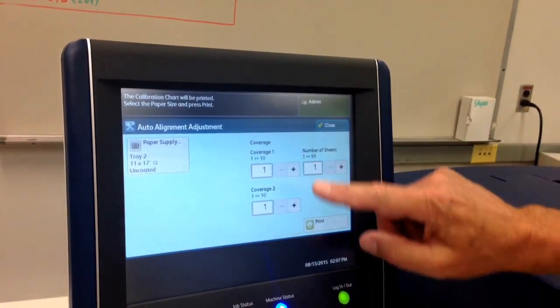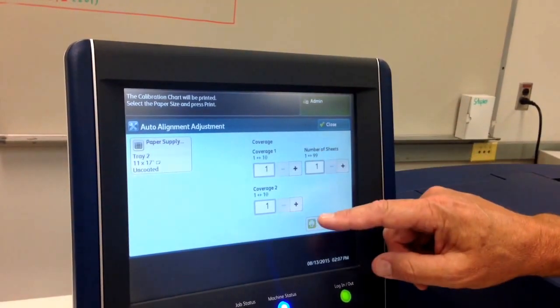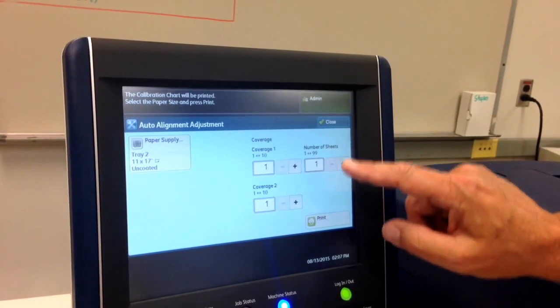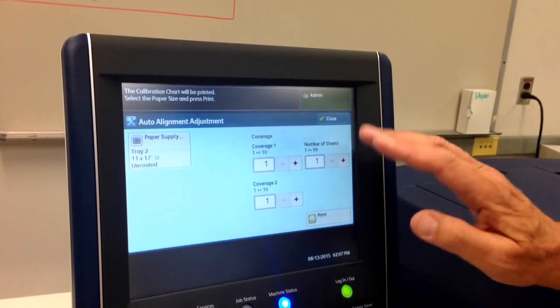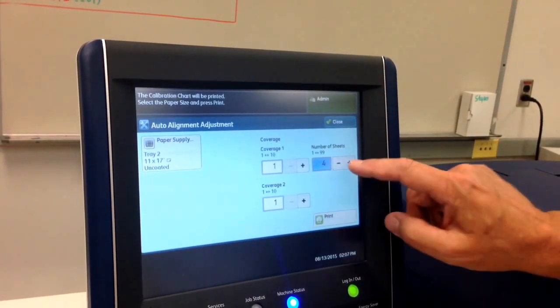You can even go in and change the variables by how much coverage you have on side 1 or side 2. You can select the number of sheets that you want printed. The greater the number, the more your statistical accuracy. In this case we're just going to do 5.